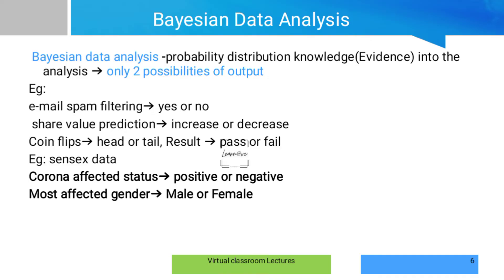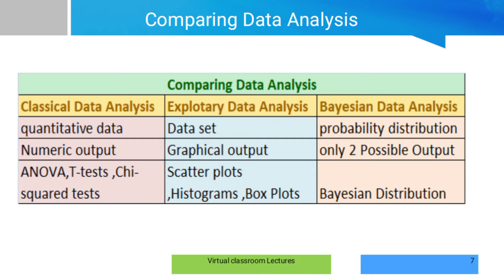To summarize: classical data analysis processes quantitative data and produces numerical output. Exploratory data analysis handles all kinds of data — numbers, text, images — and produces graphical output. Bayesian data analysis uses probability distributions as input and gives two possible outputs. EDA techniques include scatter plots, histograms, and box plots. Bayesian data analysis uses Bayesian distribution techniques.